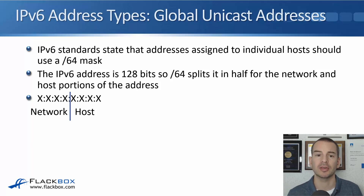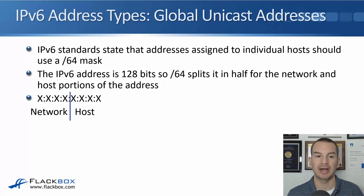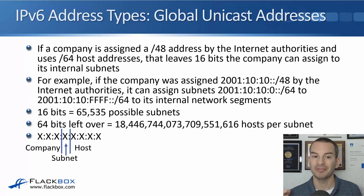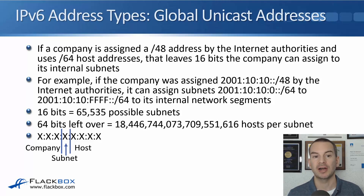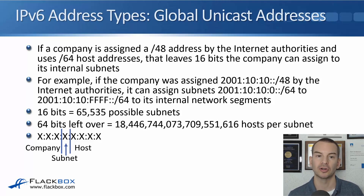The IPv6 address is 128 bits long, so a /64 splits it in half. Half of the address is the network portion and the other half is the host portion. If a company is assigned a /48 address by the internet authorities, which is common, and uses /64 host addresses as they're supposed to, that leaves 16 bits that the company can use to assign to its internal subnets and different links.